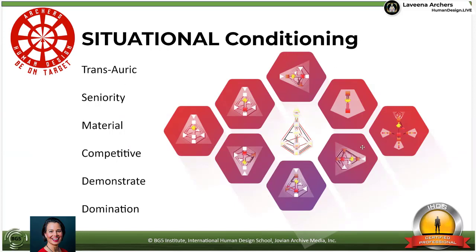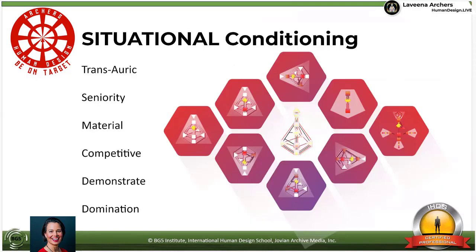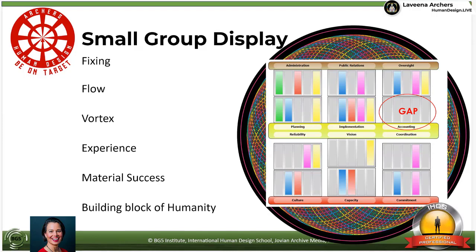All of us have deep genetic potentials that help us understand our situational conditioning. We have trans-auric forms that are created when we are in auric contact, that automatically put a lot of weight towards seniority and the material competitive, demonstrative, domination plane — the plane of making money. You make more money when you're in a small group and when you're in a large group. In order to make money, we need each other — we need to partner with, collaborate with, share with, nurture, and grow with our people. That's why I need you to really know how to follow your strategy and authority before you enter into a program like this.